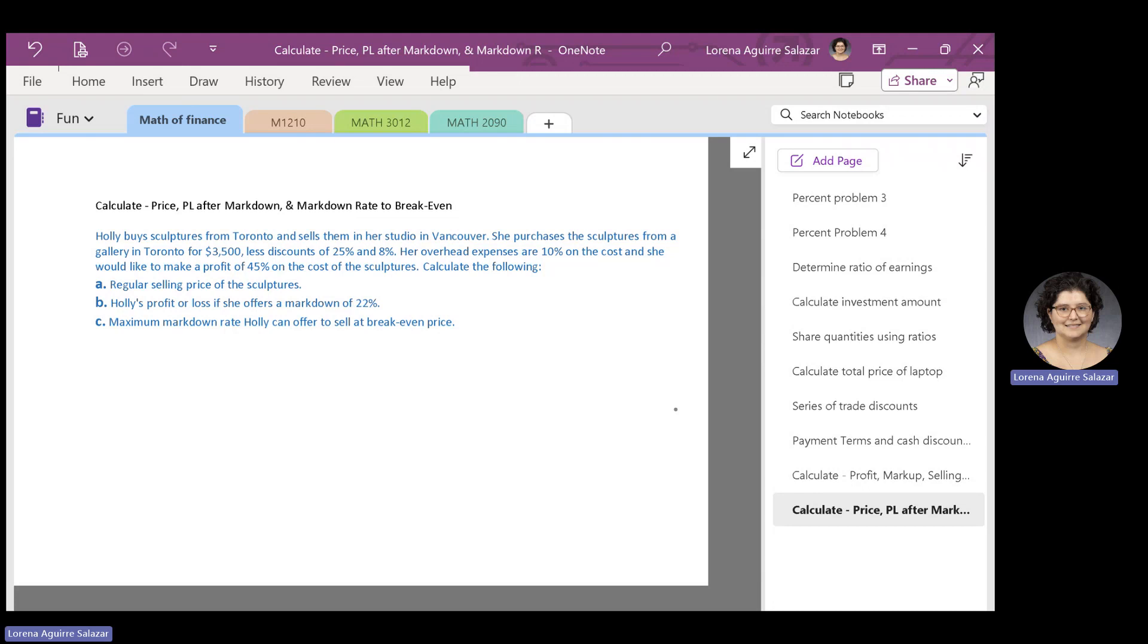To work with this problem, we need to analyze the various components that make up the retail price of the sculptures. And the first component we would like to work with is C, or cost. The cost of the sculptures is the amount paid for them after both trade discounts and cash discounts.